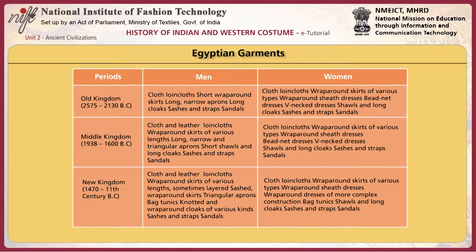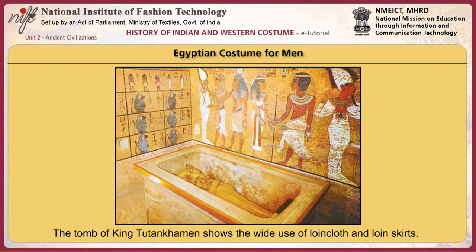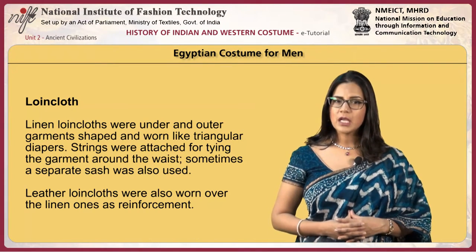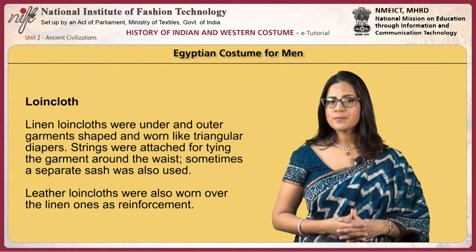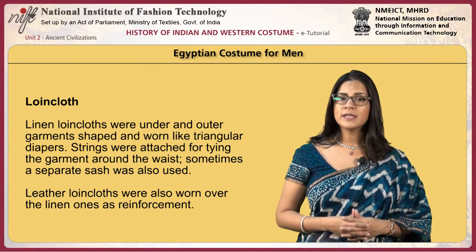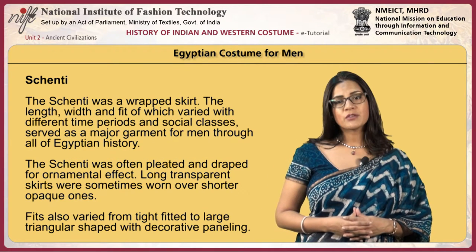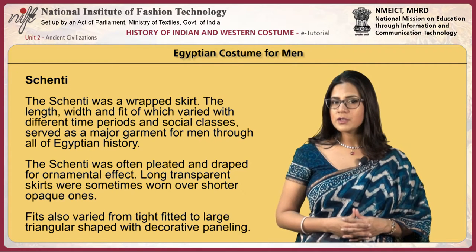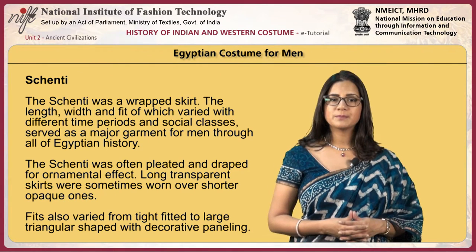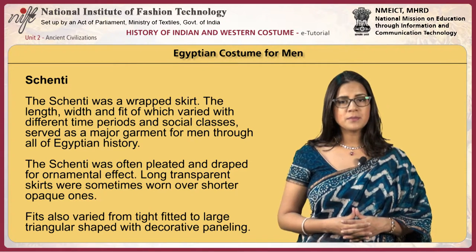Traditional Egyptian costumes for men were the loin cloth and a wrapped skirt called Shenti. Linen loin cloths were under and outer garments shaped and worn like triangular diapers, with strings attached for tying the garment around the waist. Sometimes a separate sash was also used. Leather loin cloths were also worn over the linen ones as reinforcement. The Shenti was a wrapped skirt, the length, width and fit of which varied with different time periods and social classes. It served as a major garment for men through all of Egyptian history and was often pleated and draped for ornamental effect.